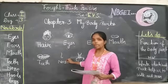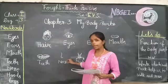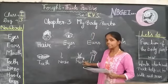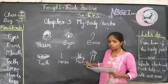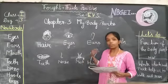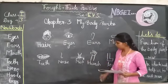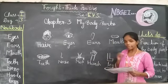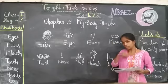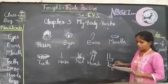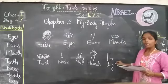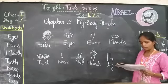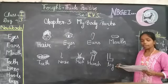I repeat it: nose helps us to breathe and smell. And next — neck. Neck joins the head and trunk. This is hand. Hand helps us to hold, eat, and write. And next is legs and toes. Legs and toes help us to walk, run, jump, and climb.